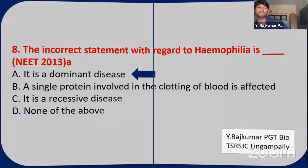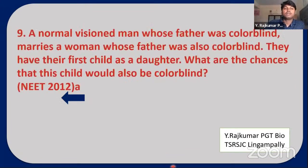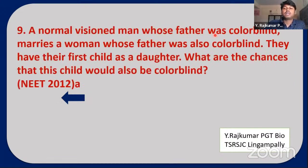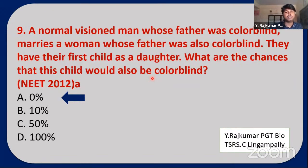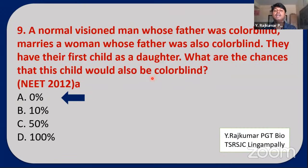Next NEET question: A normal-visioned man whose father was colorblind marries a woman whose father was also colorblind. Their first child is a daughter. What are the chances that the child is colorblind? The answer is zero percent. The father is completely normal and the mother is a carrier. From the father the daughter receives a Y chromosome and from the mother a healthy X chromosome — daughters will always be carriers, not affected.